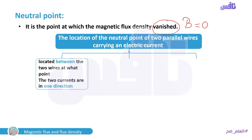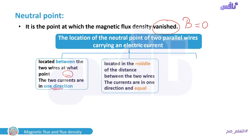If the currents are equal and in the same direction, the neutral point is located exactly in the middle between the two wires. If the currents are unequal but in the same direction, the neutral point is still between the wires but closer to the wire with the smaller current.